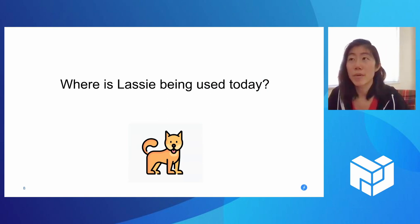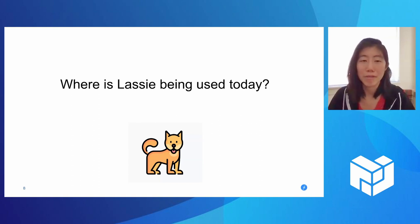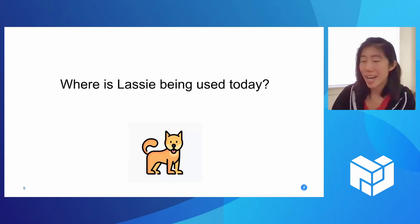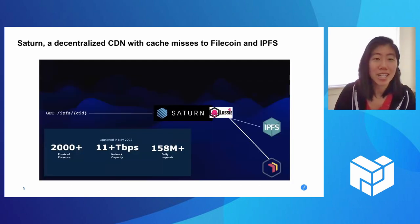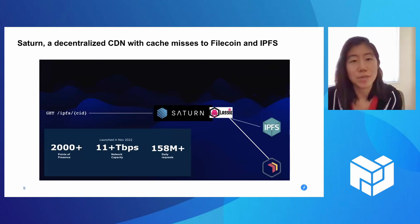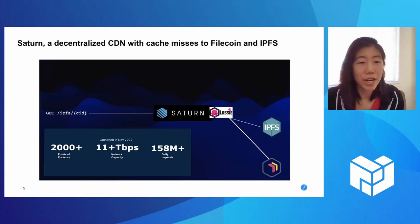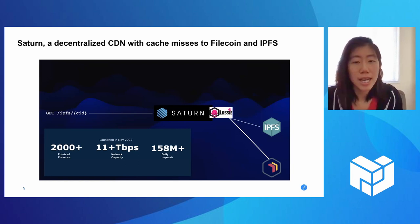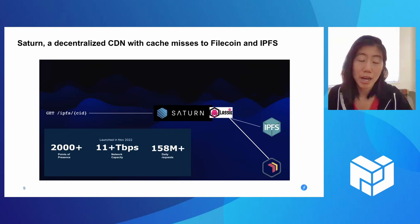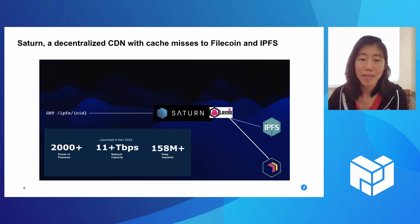Really quickly, I wanted to share where Lassie is being used today. In addition to individual end users and folks at this company using Lassie via CLI, Saturn — the decentralized CDN that many of you have probably heard about — essentially cache-misses to Filecoin and IPFS via Lassie. So if you go to Saturn and ask for a particular CID and Saturn's cache nodes don't have it, it will actually use Lassie to fetch that content from IPFS and Filecoin.